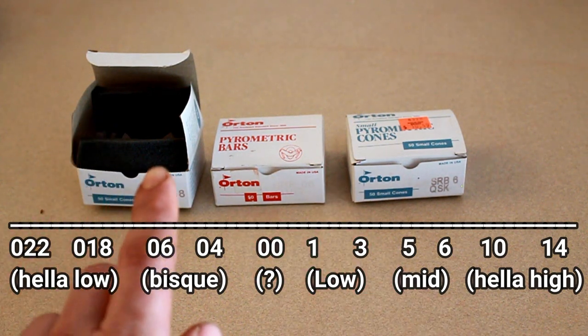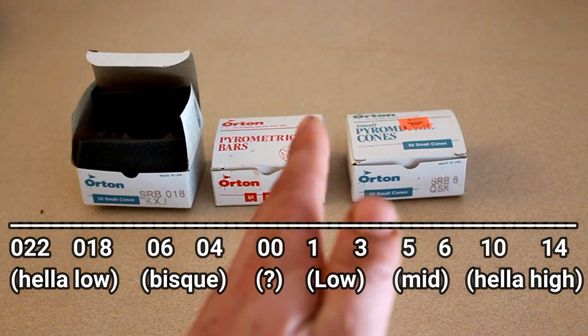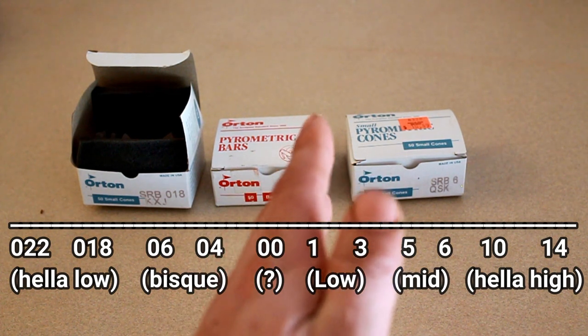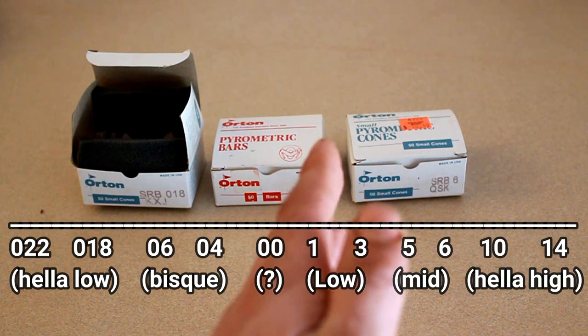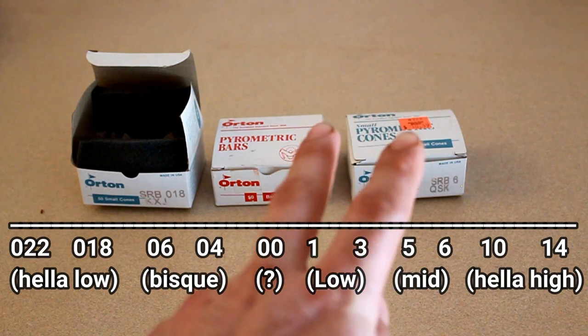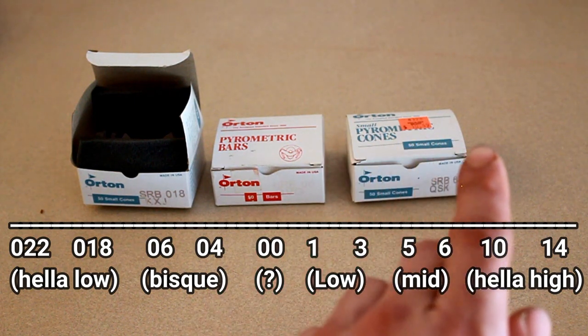But do keep in mind the temperature is still going up. Just because it reached 00 and that's technically neutral right there in the middle of the bar, that doesn't mean that it's a less temperature. At this point it goes to cone 1, 2, 3, 4, and it keeps on going up until we reach the very basic of the Orton cone chart.